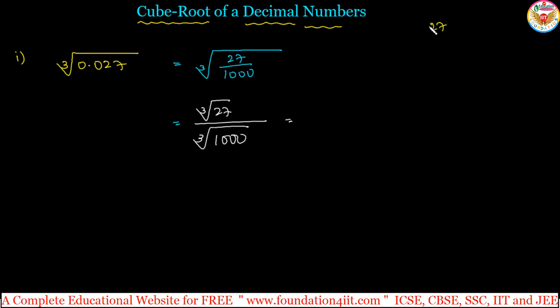For 27, the prime factorization is: 3 times 9 equals 27, and 3 times 3 equals 9, and 3 times 1 equals 3. So the cube root of 27 is 3.